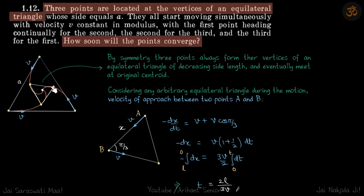At any time between the convergence and the initial position, they are still located at the vertices of a smaller equilateral triangle. Considering any arbitrary equilateral triangle during the motion, the velocity of approach between two points A and B...